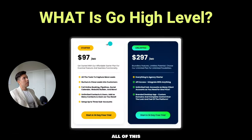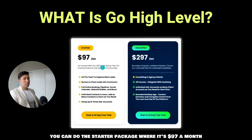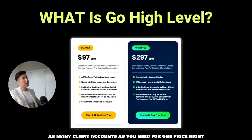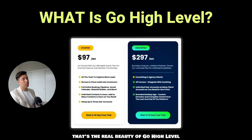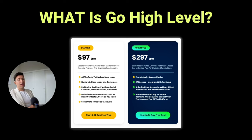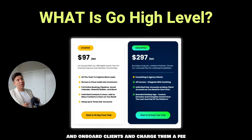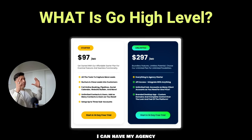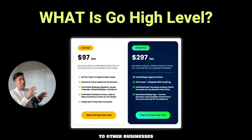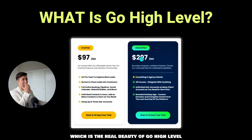Here's what the pricing looks like for Go High Level. You can do the starter package at $97 a month, but the real beauty is the unlimited package at $297, because it gives you unlimited sub-accounts — as many client accounts as you need for one price. That's what makes it really powerful. You're able to pay $297 and onboard clients and charge them a subscription fee. You can white-label it, put your own logo, resell it to other businesses, and charge them literally whatever you want.